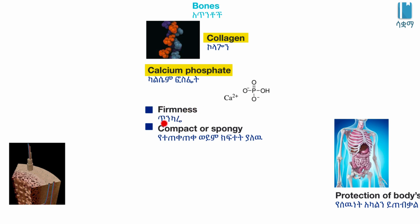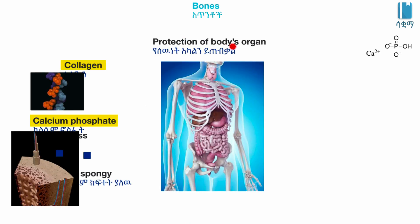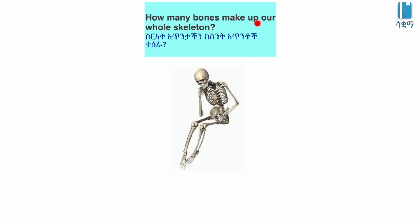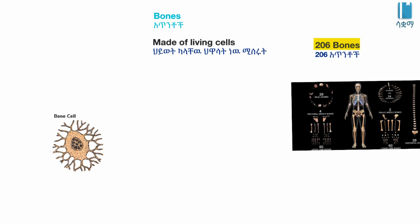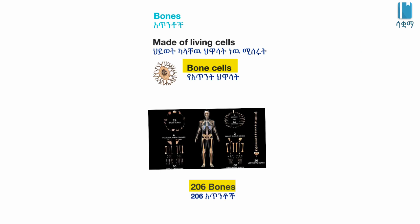Bone can be compact or spongy. Our bones protect our body organs. How many bones make up our whole skeleton? Our bones are made up of living cells — these are bone cells. The adult human skeleton is also made up of living cells.